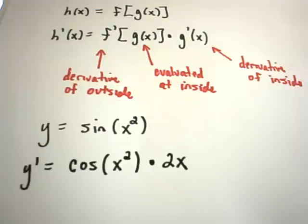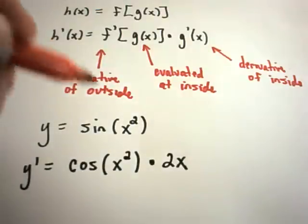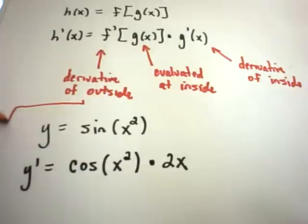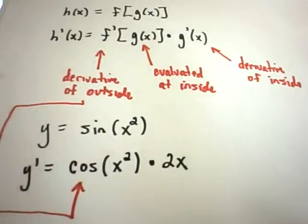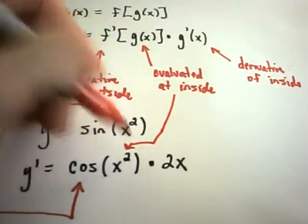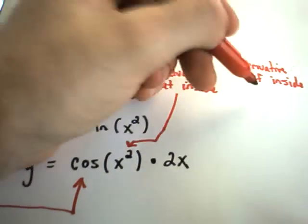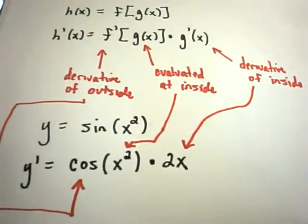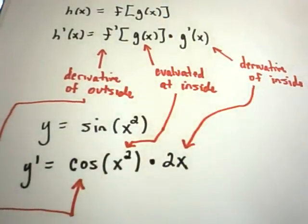So notice we've got, if you think about the sine as being the outside, the x squared as being the inside. Notice we took the derivative of the outside part, we evaluated it at the inside part, and then we multiplied that by the derivative of the inside part. So that's a basic chain rule example.